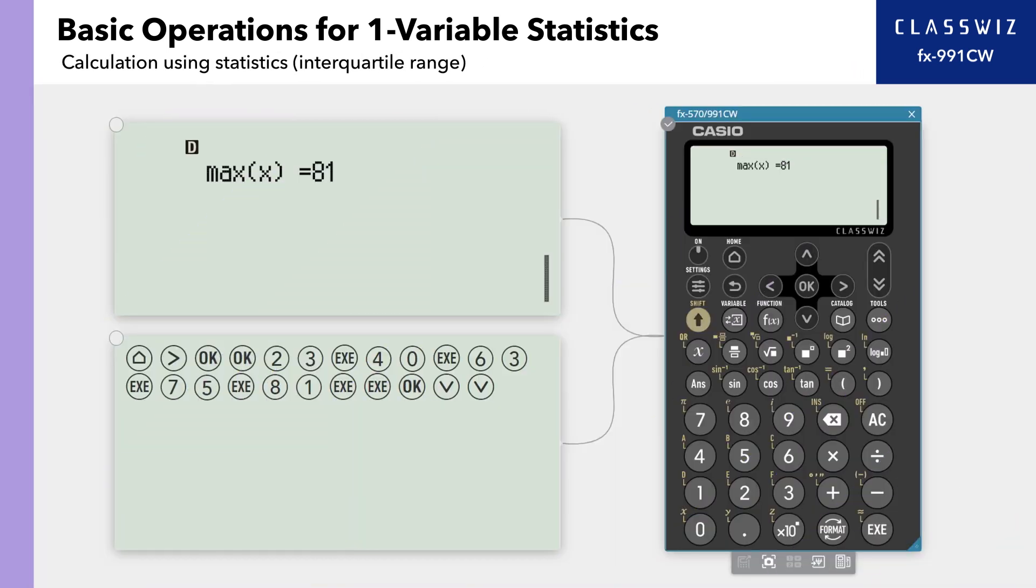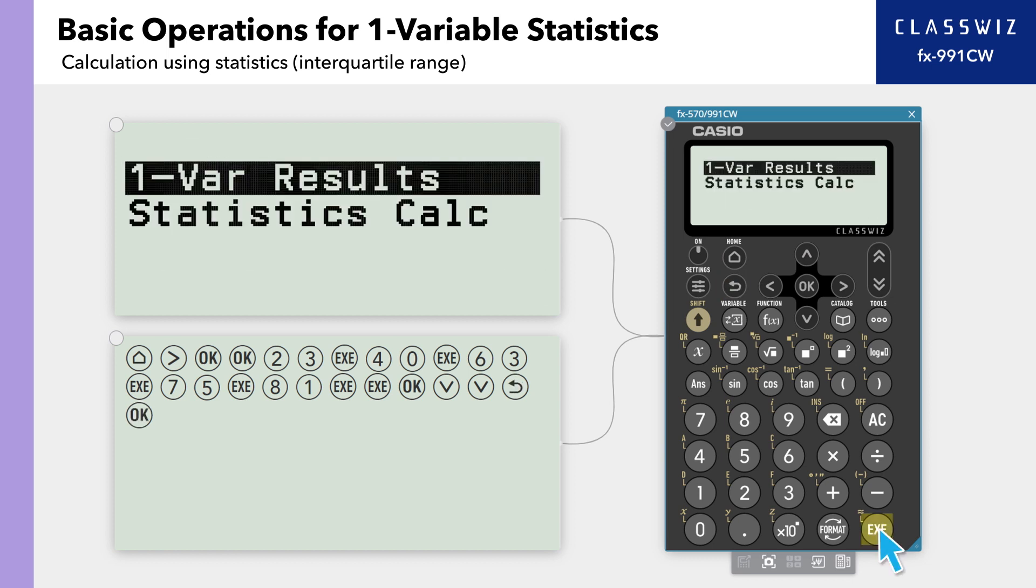We can perform calculations based on these first quartile and third quartile values. Press back to return to the statistics editor, then press execute again, this time selecting statistics calculation.